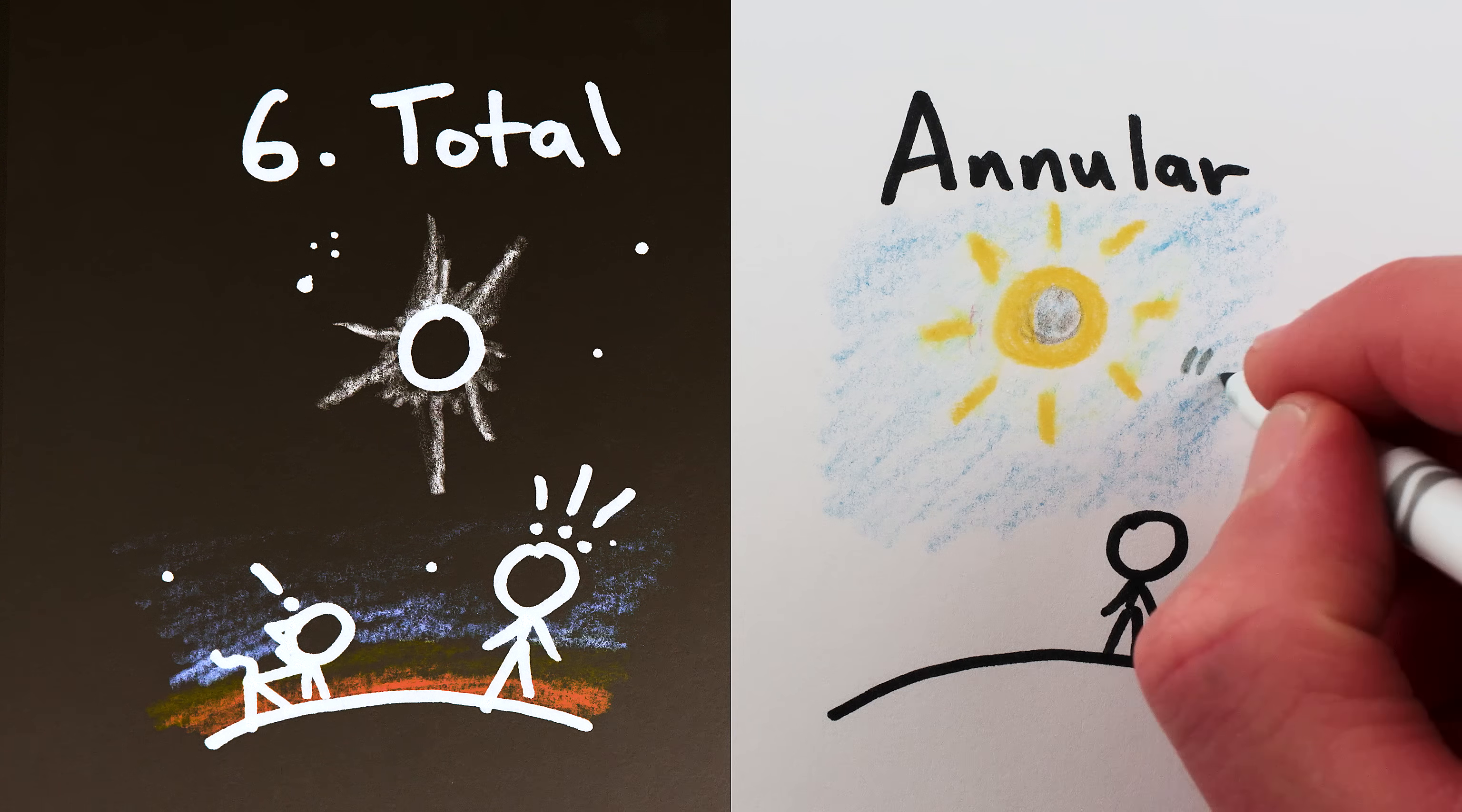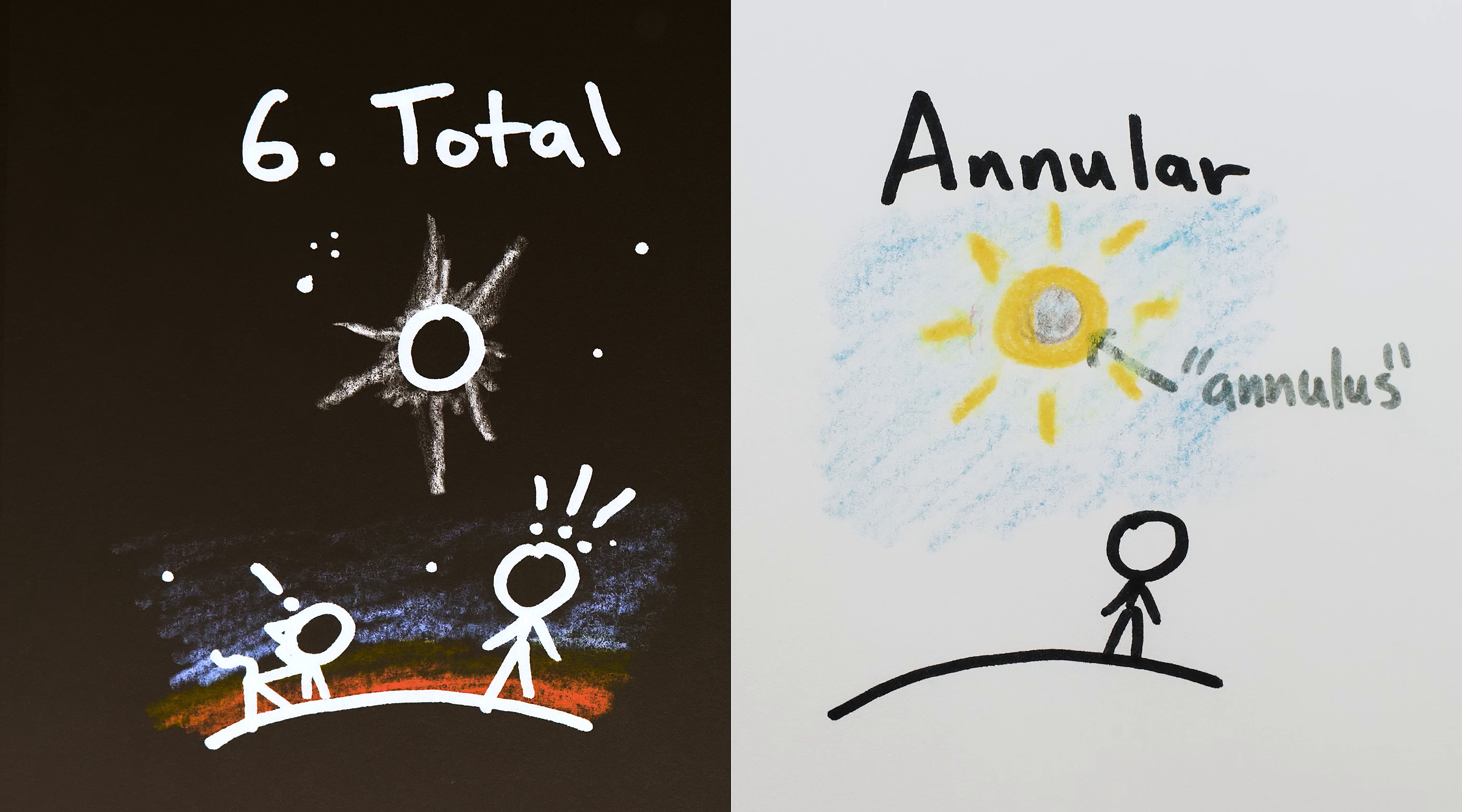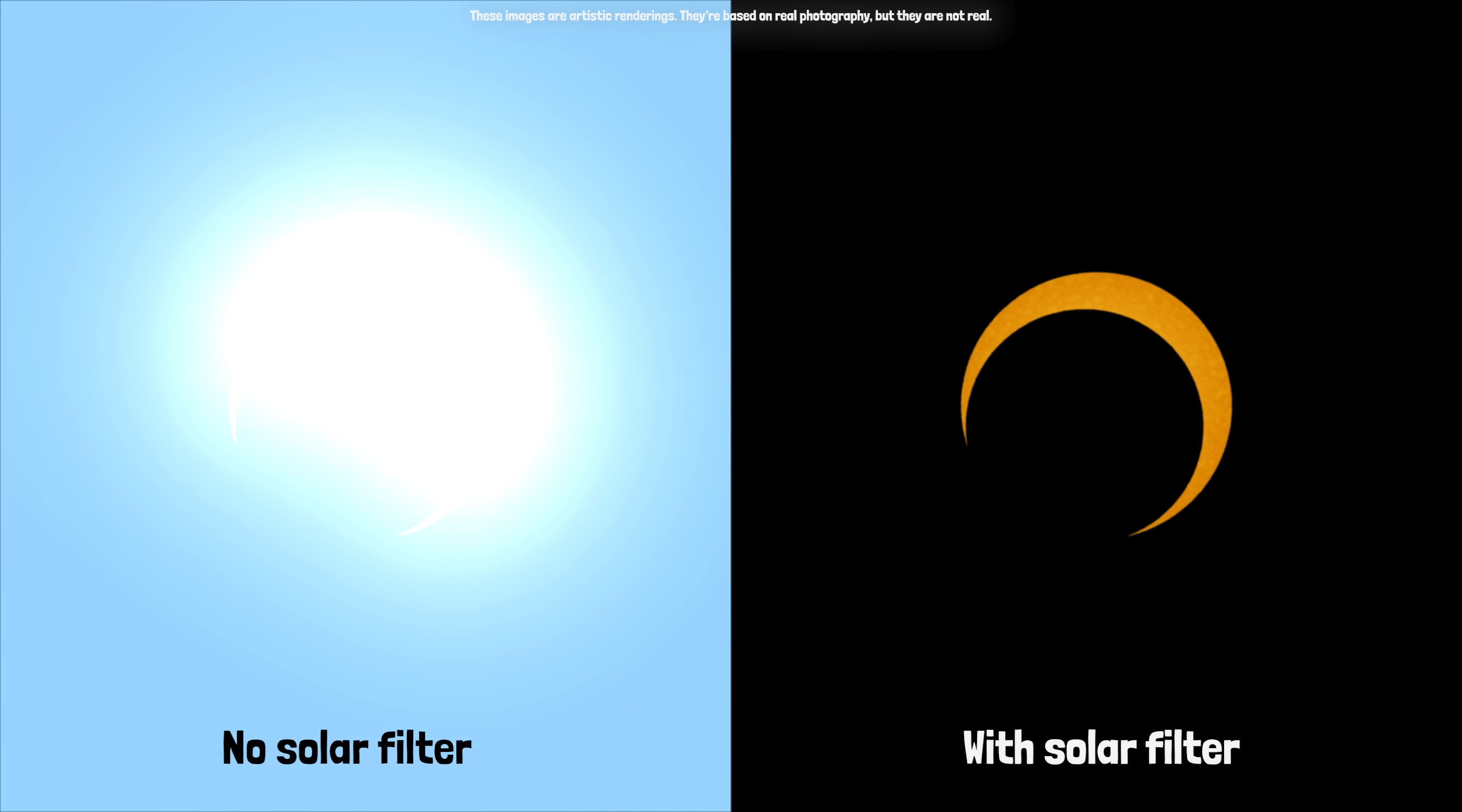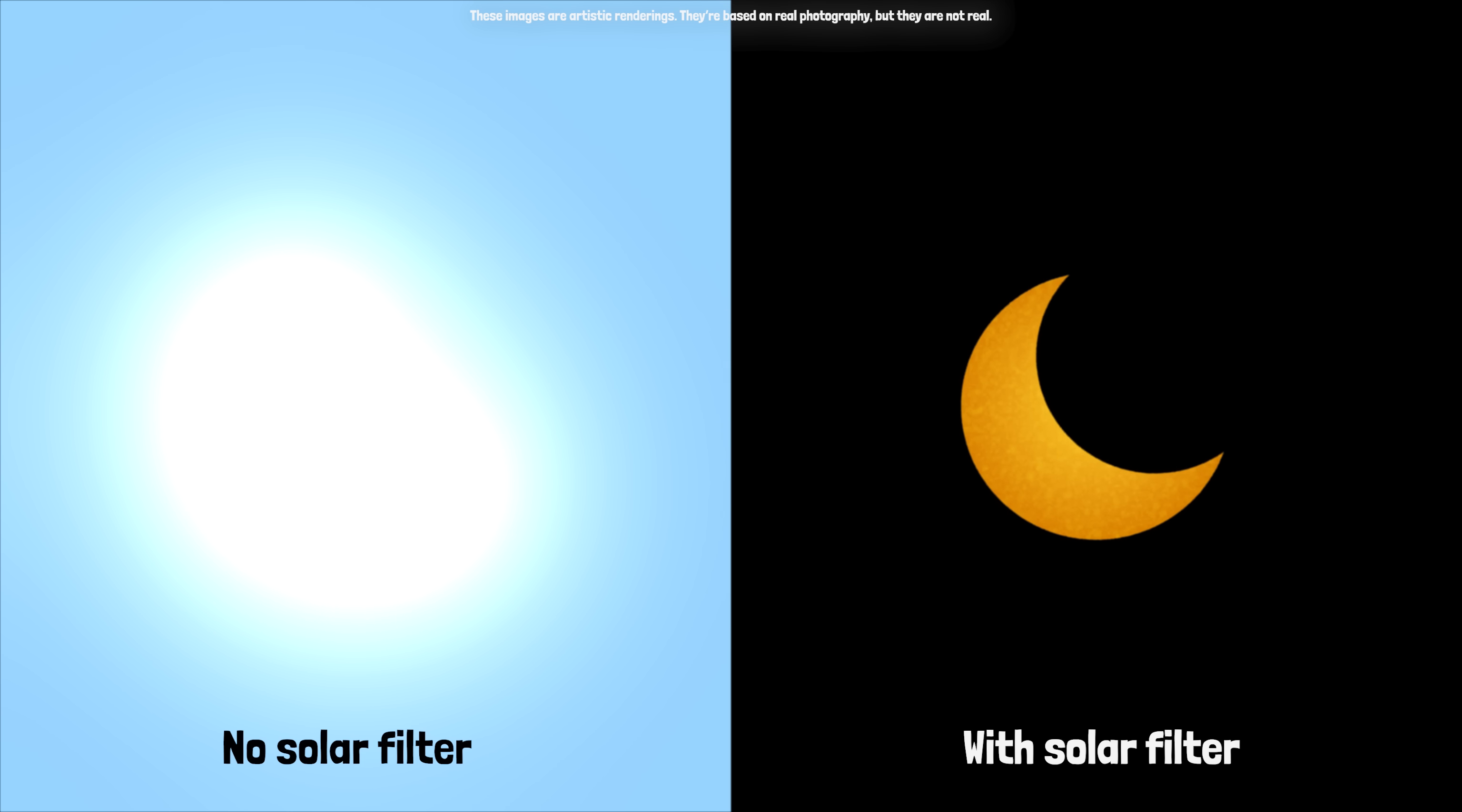At best, there's still a ring, or annulus, of the sun visible, hence annular eclipse. Because they don't fully block the sun's disk, annular eclipses aren't really much more impressive than partial eclipses. The sky doesn't get deep blue, you don't see the corona, you can't look at them with your naked eyes, etc.